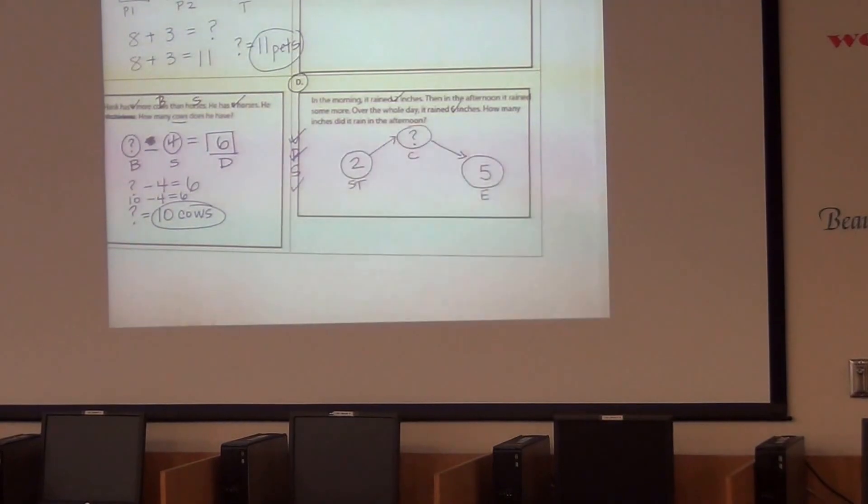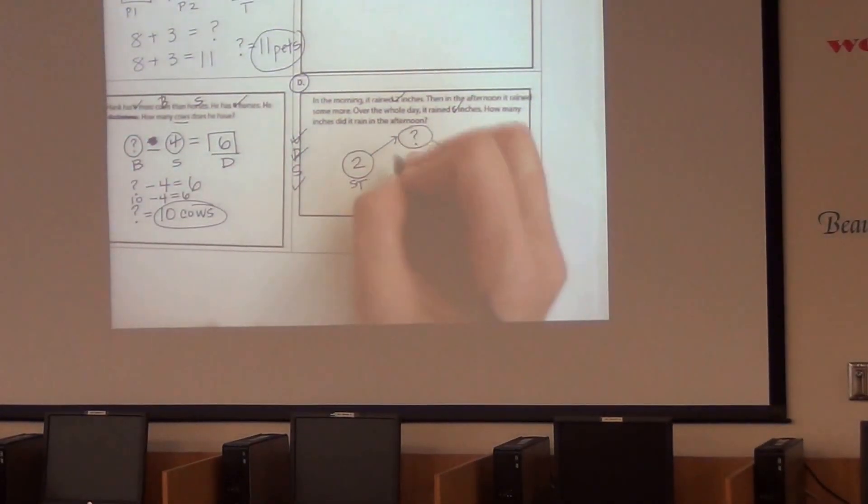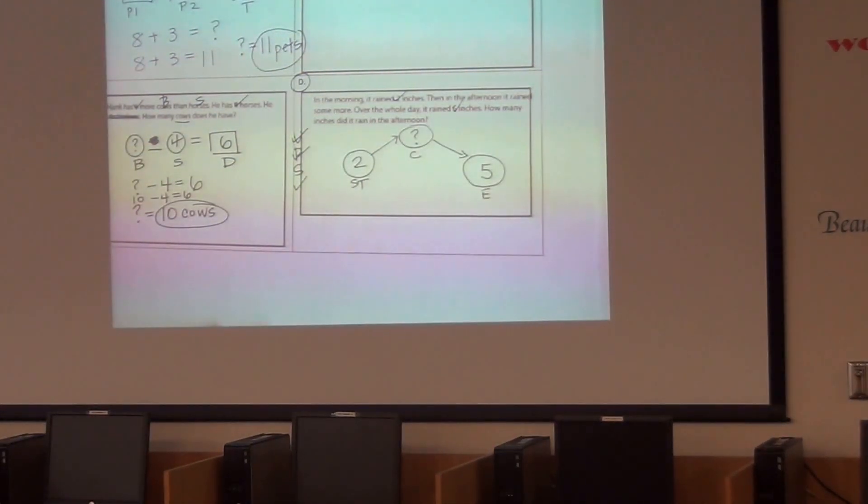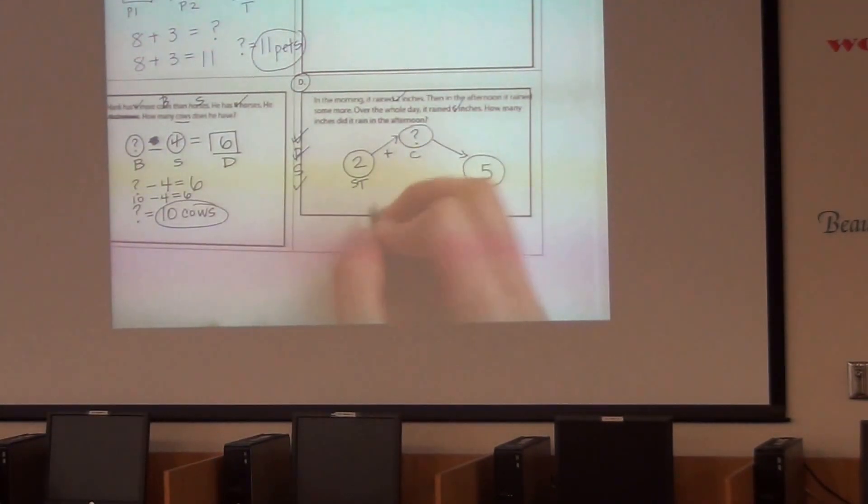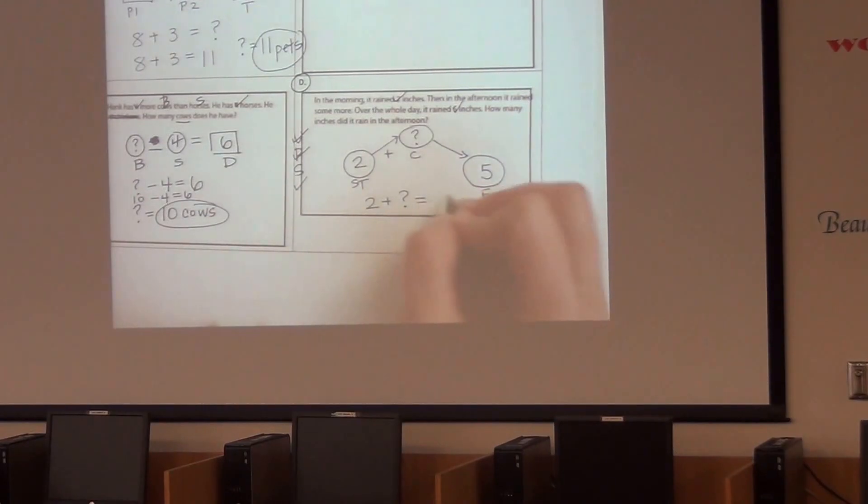Now I can go ahead and solve. I forgot one thing: If it's a starting amount and it's a change in the amount of rain, if it rained more, am I going to use a plus sign or a minus sign? Plus sign. So I'm going to put a plus right there to help me remember that. Two plus question mark equals five.